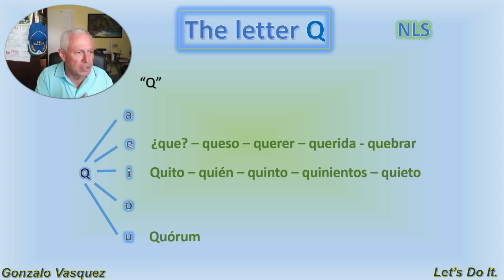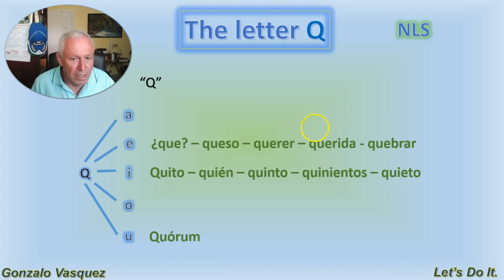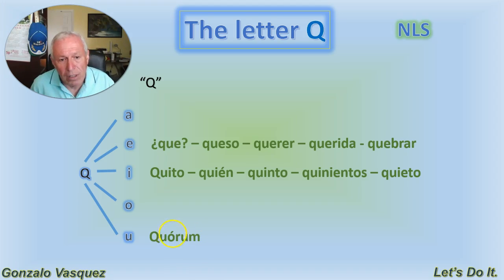That's the quorum. And if we don't have the stipulated number of members, they say there's no quorum to approve. So quorum is the only word that you will see where the Q makes a 'qu' sound with the U actually pronounced.